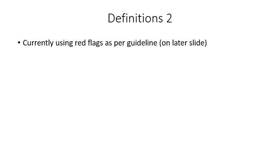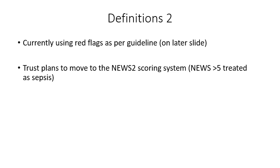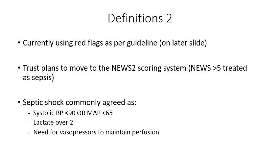Defining neutropenia is easy enough, but defining sepsis is perhaps a little more difficult because there are so many different systems and sets of criteria. At the moment the Trust is using the red flag system, where a series of criteria — any of which suggest red flag sepsis — means you get on with doing the Sepsis 6. There were plans to move to the NEWS2 scoring system, which is nationally approved, where anyone with NEWS 5 or more is treated as sepsis. Perhaps more commonly agreed is the definition of septic shock: systolic BP less than 90 or MAP less than 65, lactate over 2, and the need for vasopressors to maintain perfusion. This is internationally agreed, unlike sepsis, which tends to have several different systems.